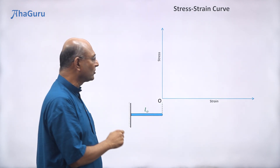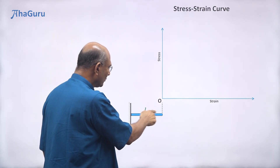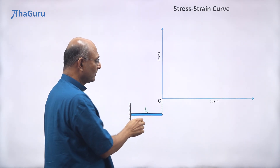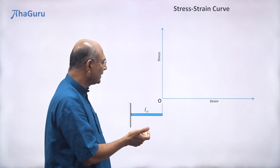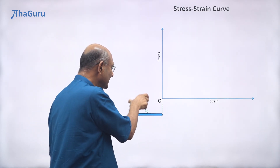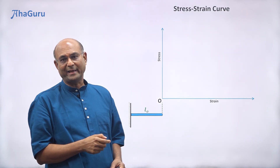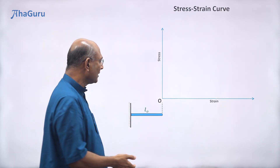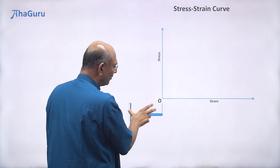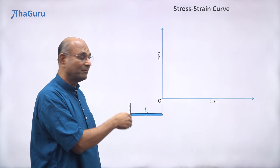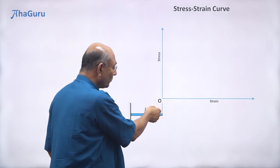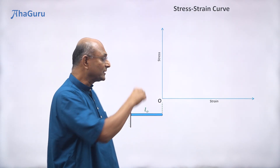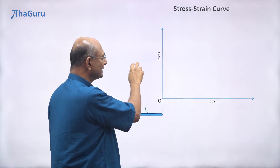The curve we are going to draw is called the stress-strain curve. As I keep pulling, the rod extends. The extension will be delta-L, and strain is delta-L divided by the original length L-naught. I have drawn this scaled to unit length, so delta-L divided by one equals the strain directly, giving a good idea of the strain values.